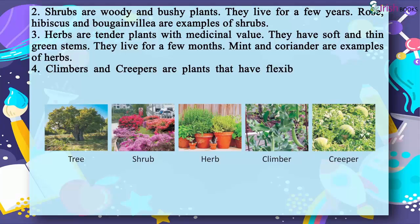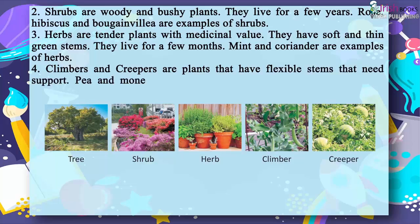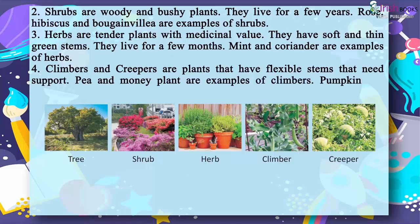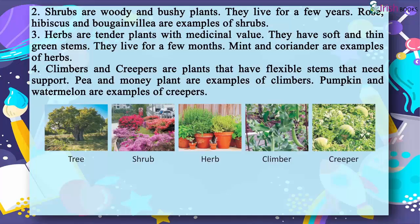4. Climbers and creepers are plants that have flexible stems that need support. Pea and money plant are examples of climbers. Pumpkin and watermelon are examples of creepers. Plant types: tree, shrub, herb, climber, creeper.